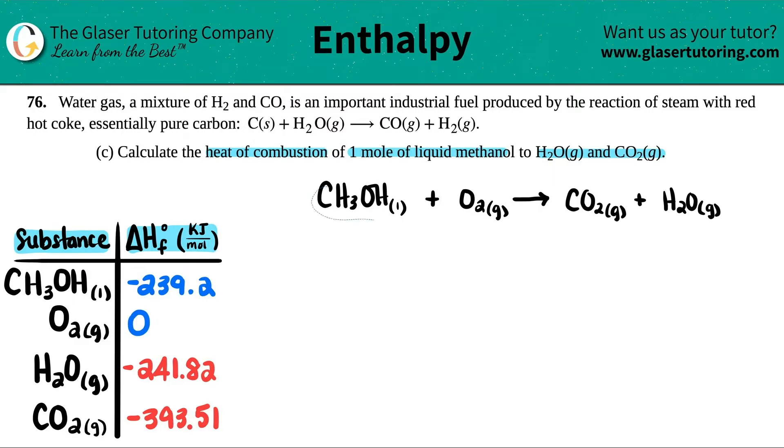We wrote the equation but we need to make sure it's balanced. I got one carbon on each side, so that's good. I got four total hydrogens here—three and one—so I need to put a 2 in front of H2O to get four hydrogens.